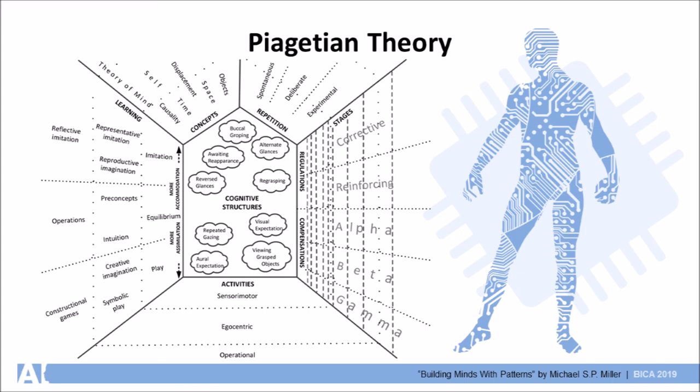Piaget's theory was constructivist because he believed that the mind continually synthesized new structures from the existing ones from birth until death. Piaget believed that concepts such as space, time, causality, objects, and displacement were formed by this continual synthesis,